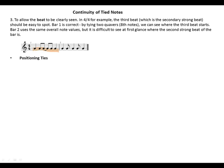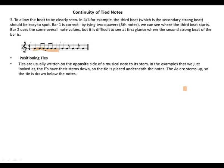Positioning of ties: ties are usually written on the opposite side of a musical note to its stem. In the examples that we just looked at, the F's have their stems down, so the tie is placed underneath the notes. The A's are stems up, so the tie is drawn below the notes.